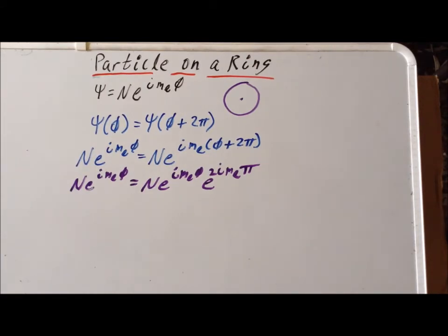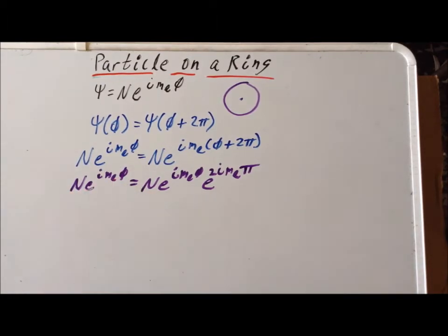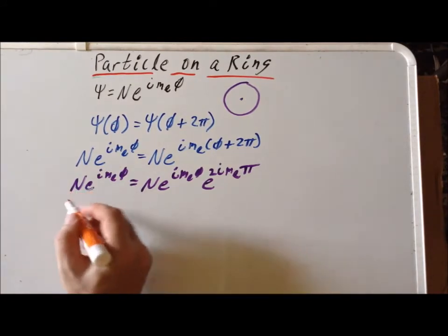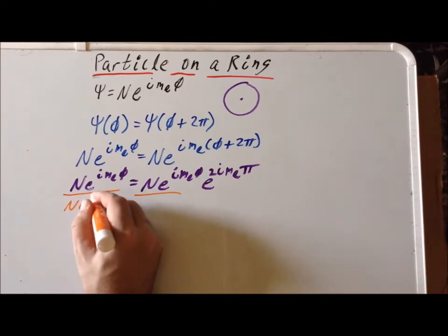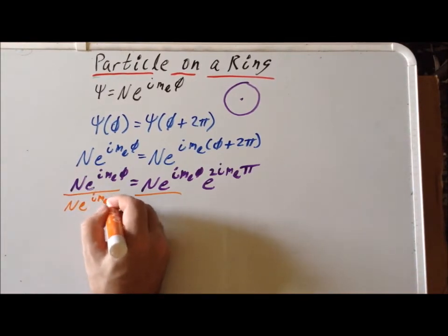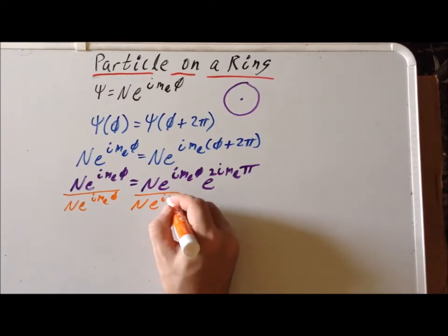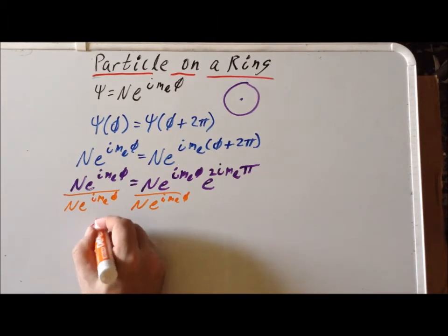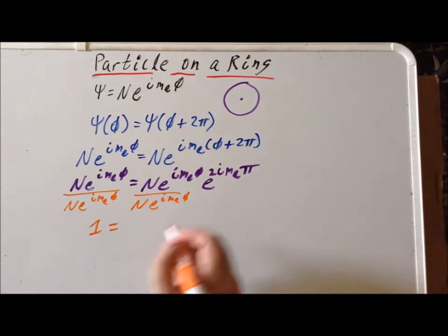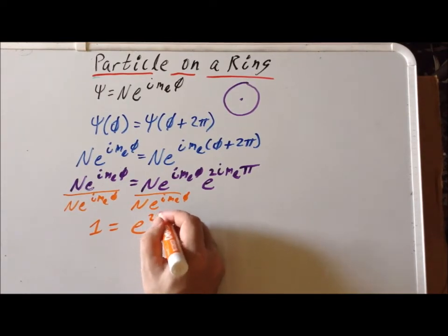So now if I continue, I notice that I have N times e to the i m sub l phi on each side. So I can divide through by that expression. And if I do that, what does the left-hand side become? It becomes simply 1. And the right-hand side becomes e to the 2 pi i m sub l.